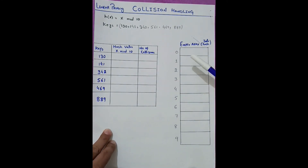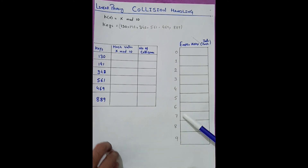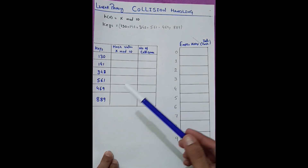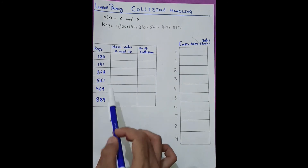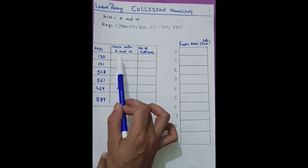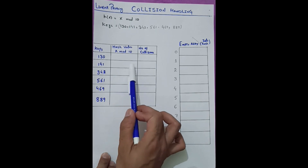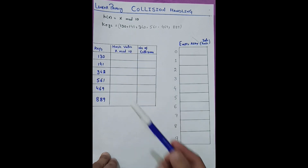The indexes are from 0 to 9, giving us 10 indexes. We will fill the hash table with those values through linear probing when a collision occurs. From the left side I write all the keys, and on the right we write the mod values produced by the hash function x mod 10.